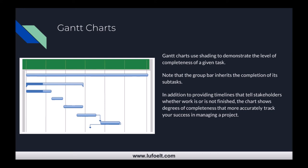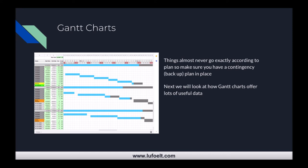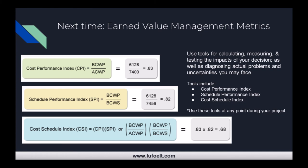Gantt charts also use shading to demonstrate the level of completeness of a given task. As each task is completed, the group bar gets filled in more. In addition to providing timelines, the charts show degree of completeness more accurately, helping you be more effective in managing a project. In the next video I will teach about some earned value management metrics that you can use for calculating, measuring, and testing ideas.